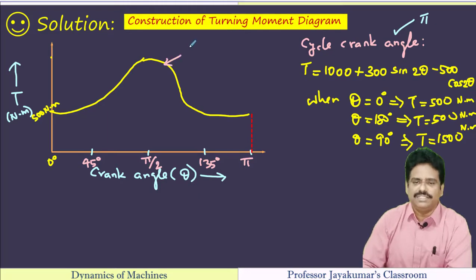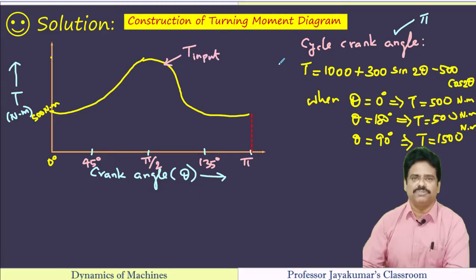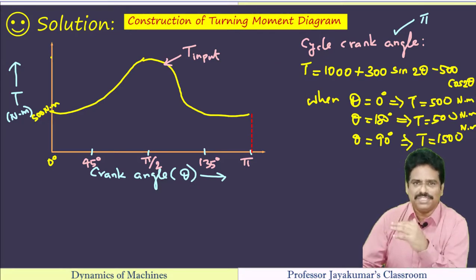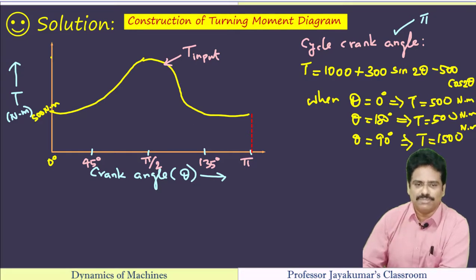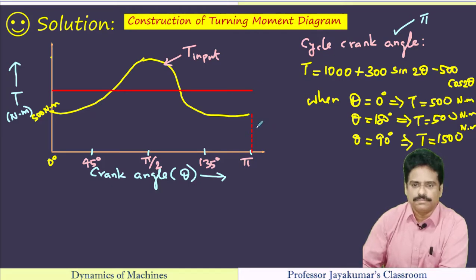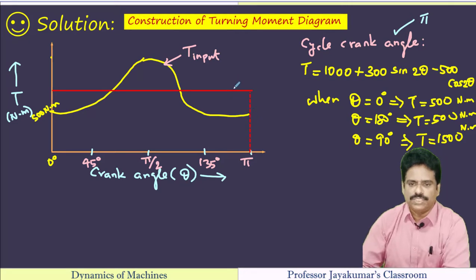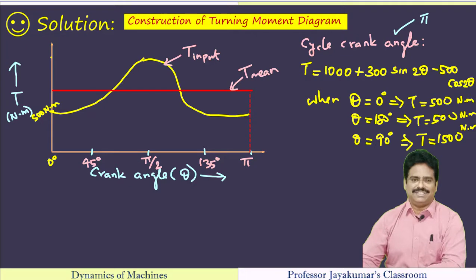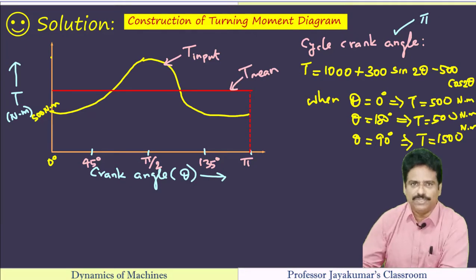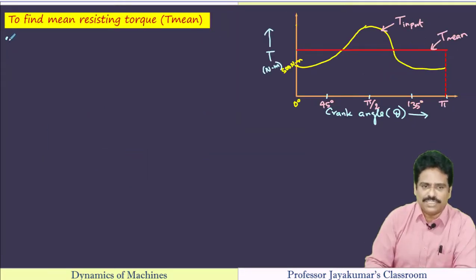Now I will draw a conceptual turning moment diagram. This is my input torque equation. Now shall I draw the mean resisting torque line — that is the constant value — so let me draw a horizontal line here. This is my T_mean line. We do not know T_mean right now, so let us find it.